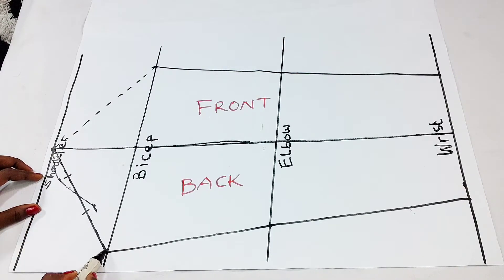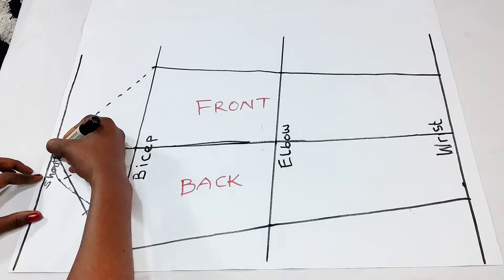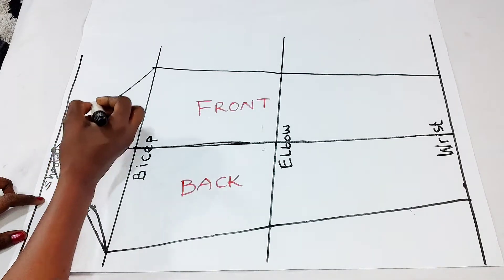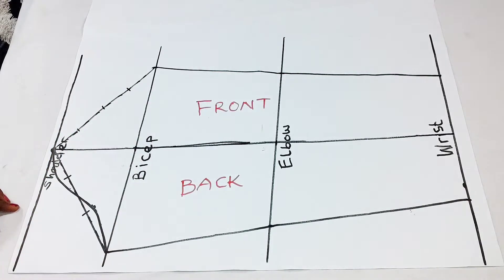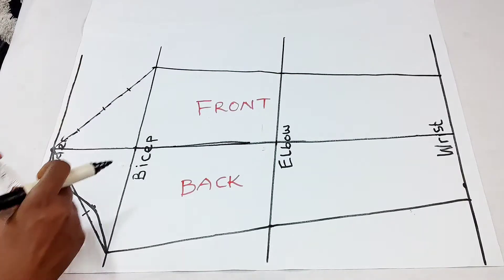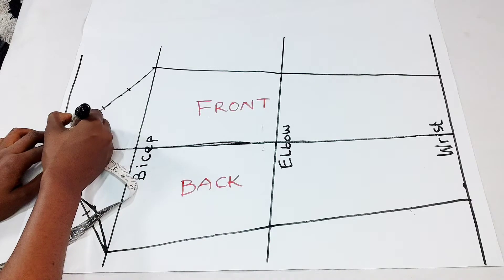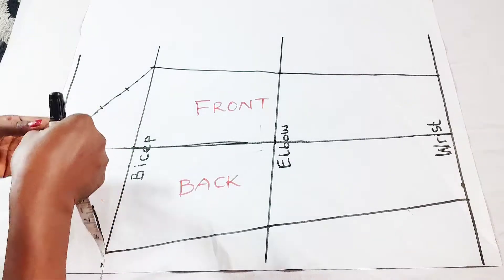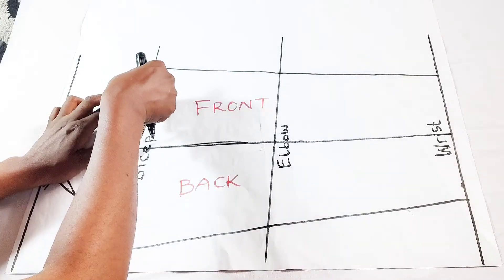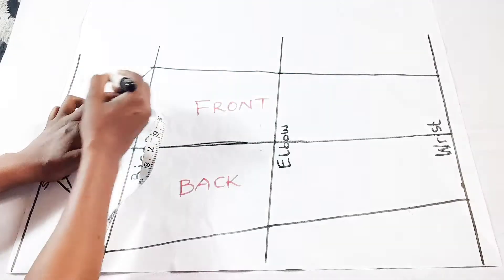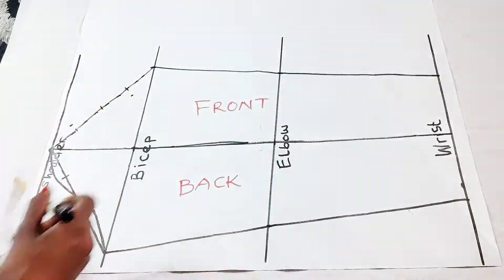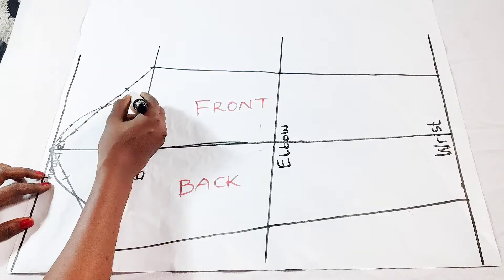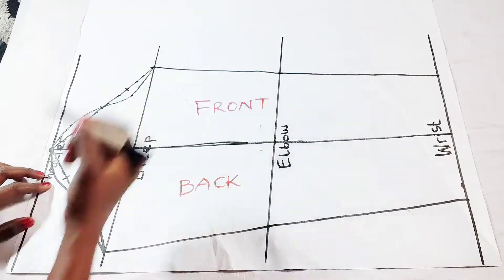Now for the front part of your sleeve, we divide into four equal parts. On the first part, we go above by 0.5 inches. The middle, you do nothing about it. Then on the third line, you go below by 0.75 inches, which is three-quarters of an inch. Then I go ahead here to sketch like I did with the first one.